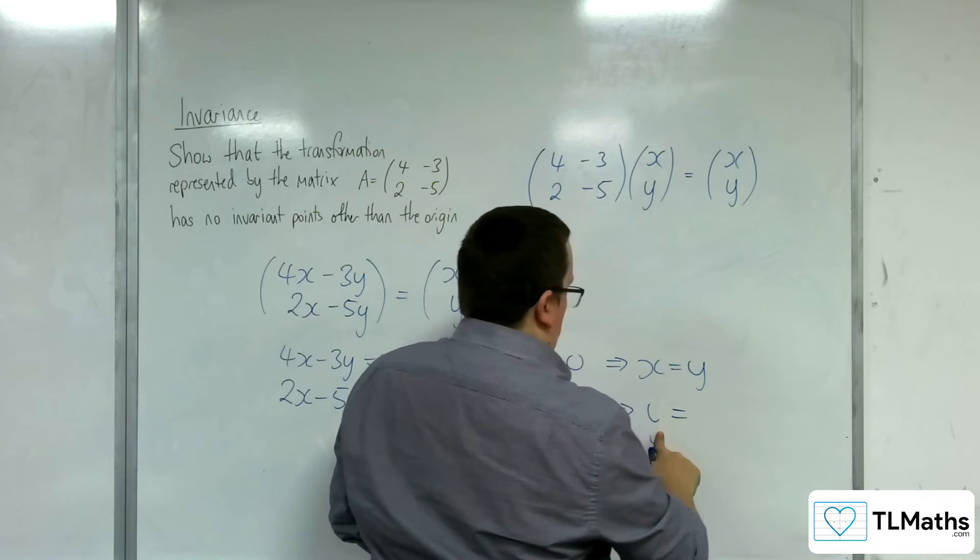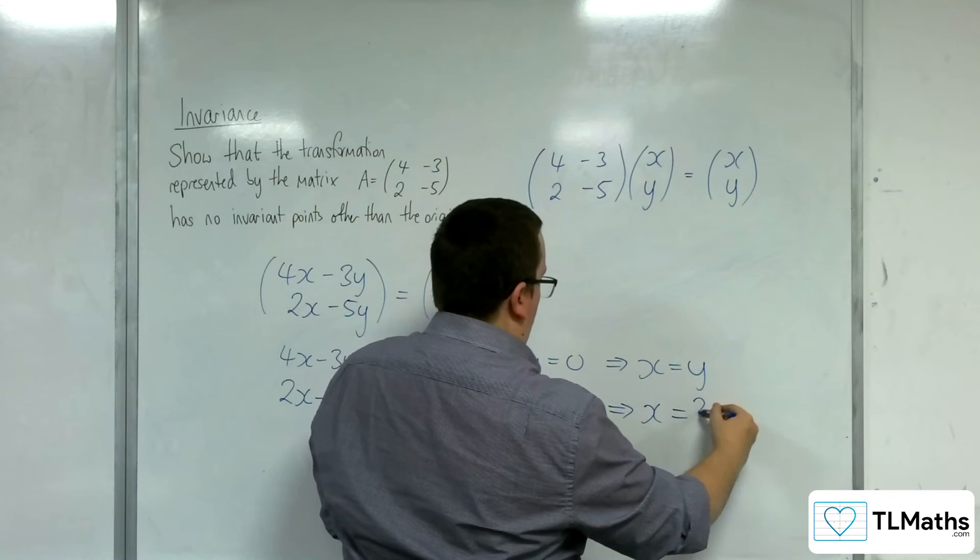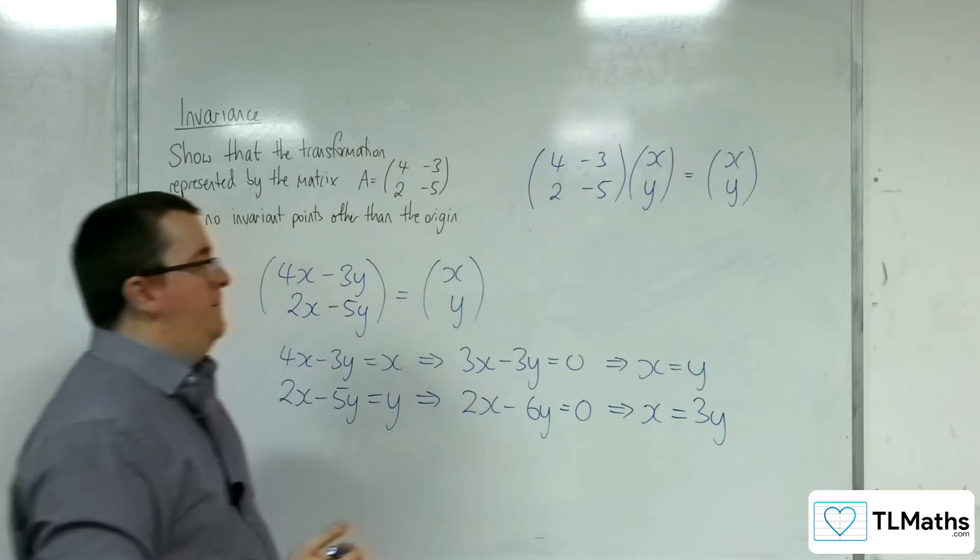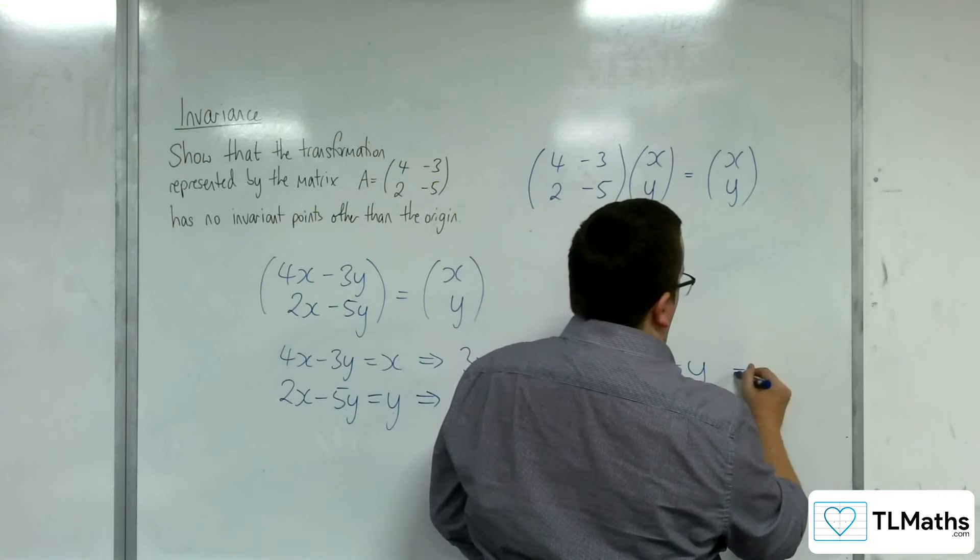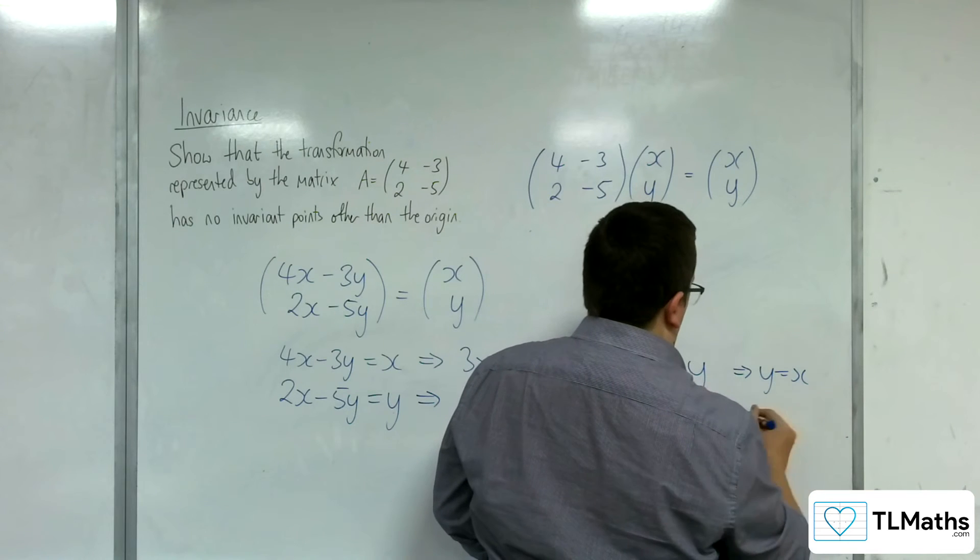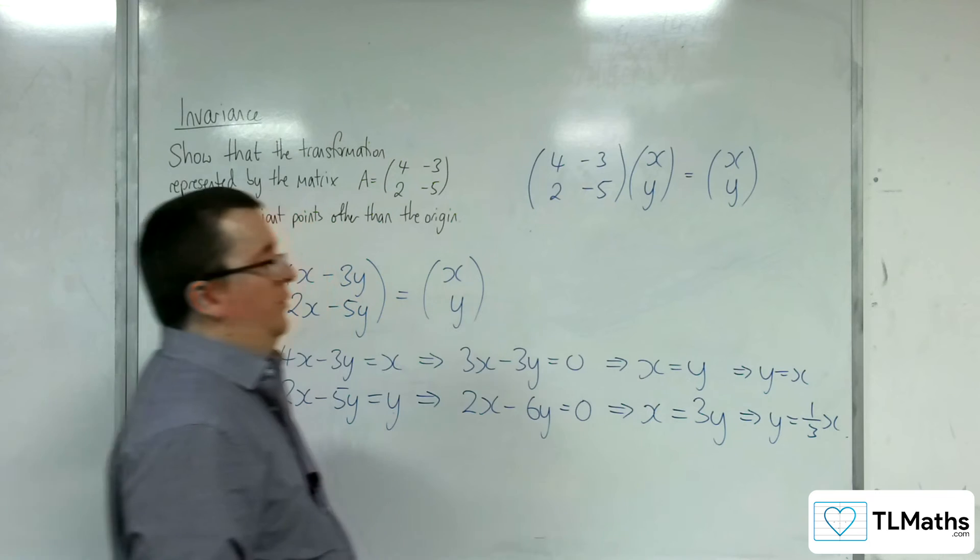Or, let's write it around this other way so I've got it consistent with that one. So x is equal to 3y. So you can either think of this as y equals x, and this one is y equals 1 third x.